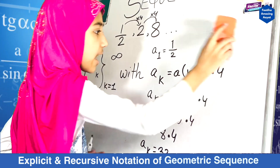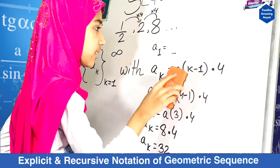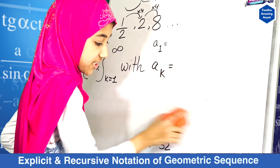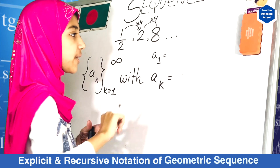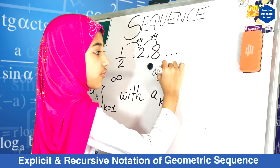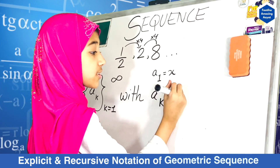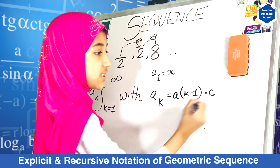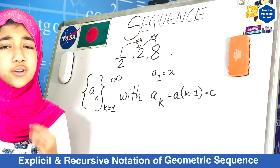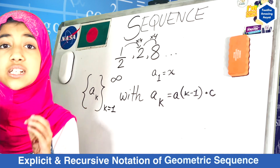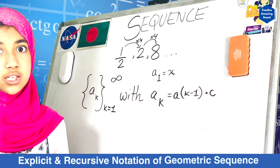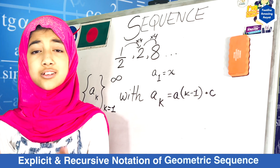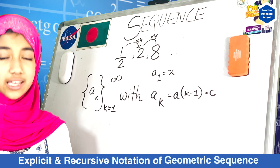Now I'm going to show you the basic structure that you need to remember for the recursive of this geometric sequence — it's actually very easy. A sub 1 is equals to your first term, and A sub k is equals to A sub k minus 1, your previous term, multiplied by your common difference. This is the basic structure you need to remember. So dear viewers, now you know how to write the recursive and explicit ways of the geometric sequence. In the previous videos I showed you how to do it for the arithmetic, and now I've shown you the geometric. Thank you and Assalamualaikum.